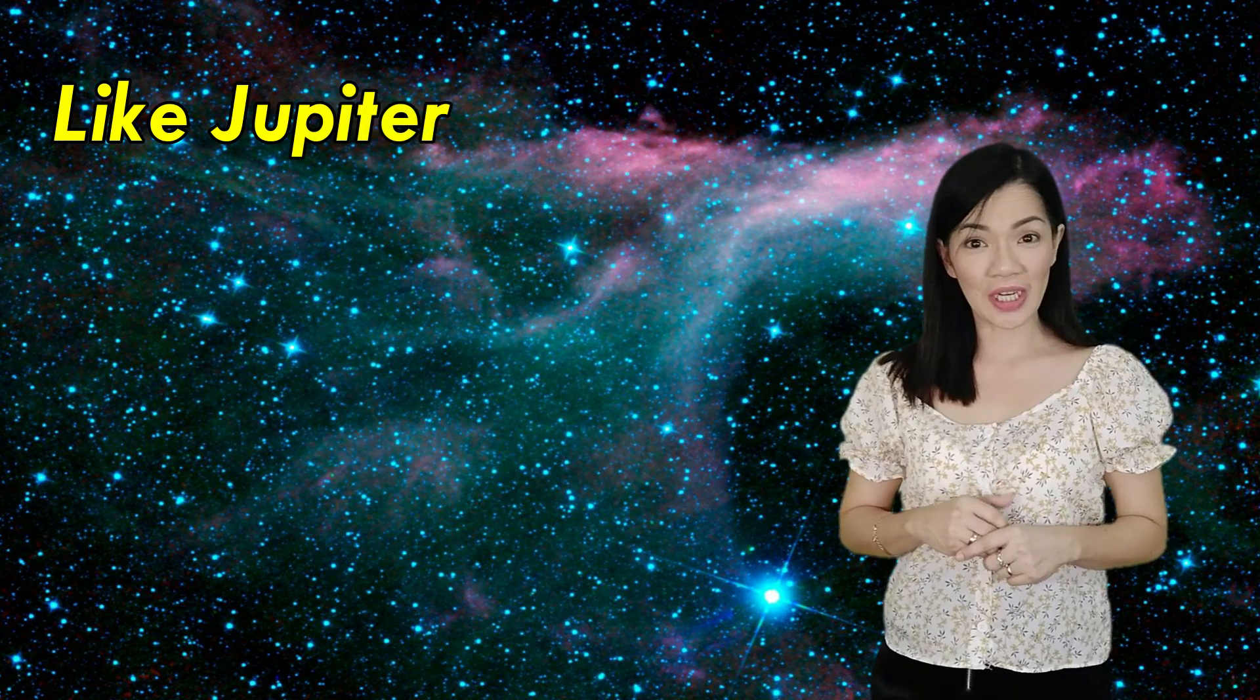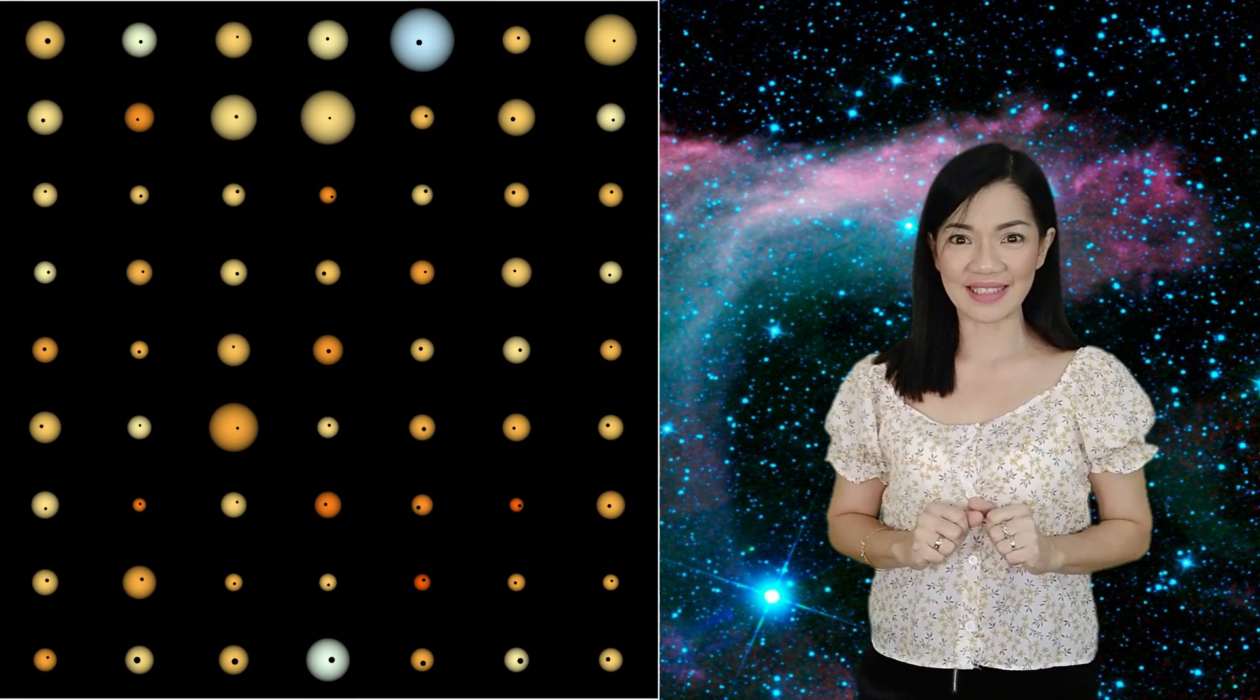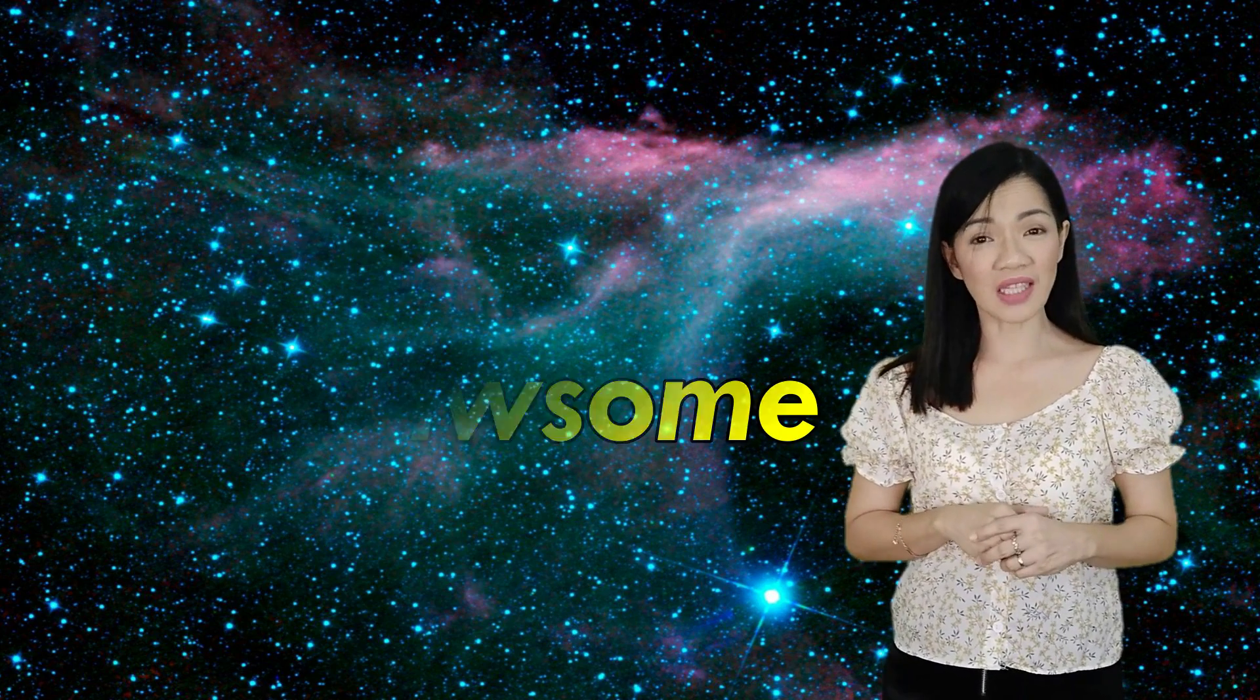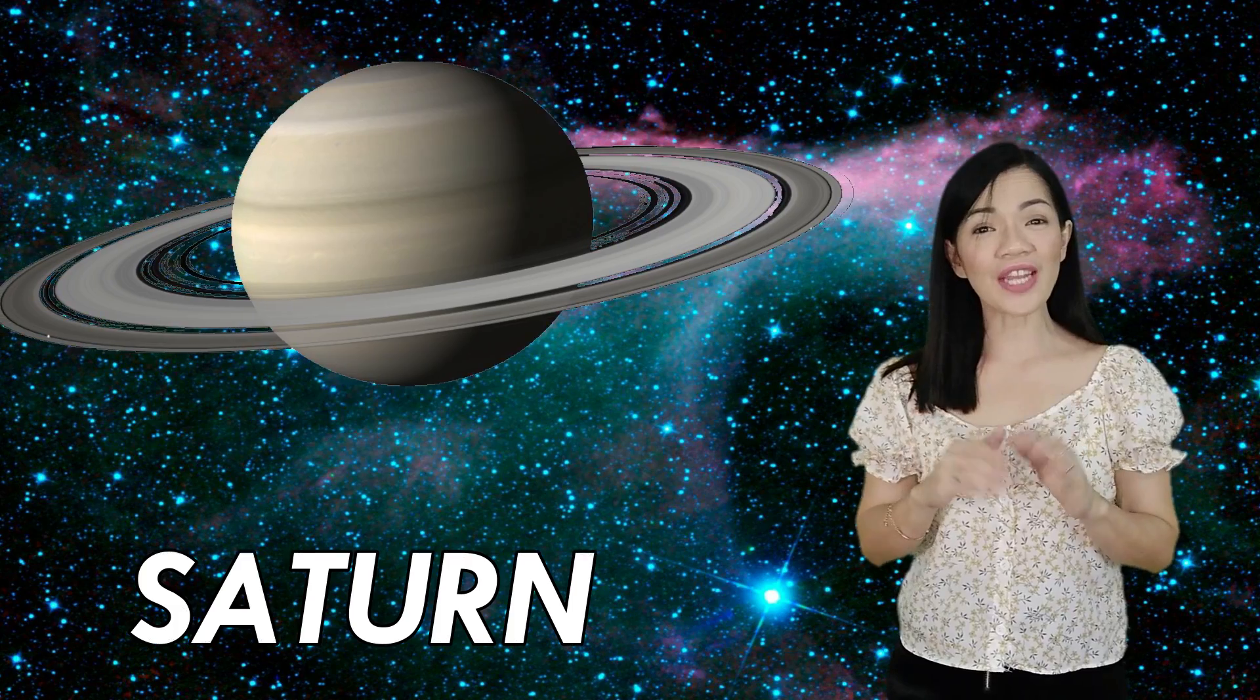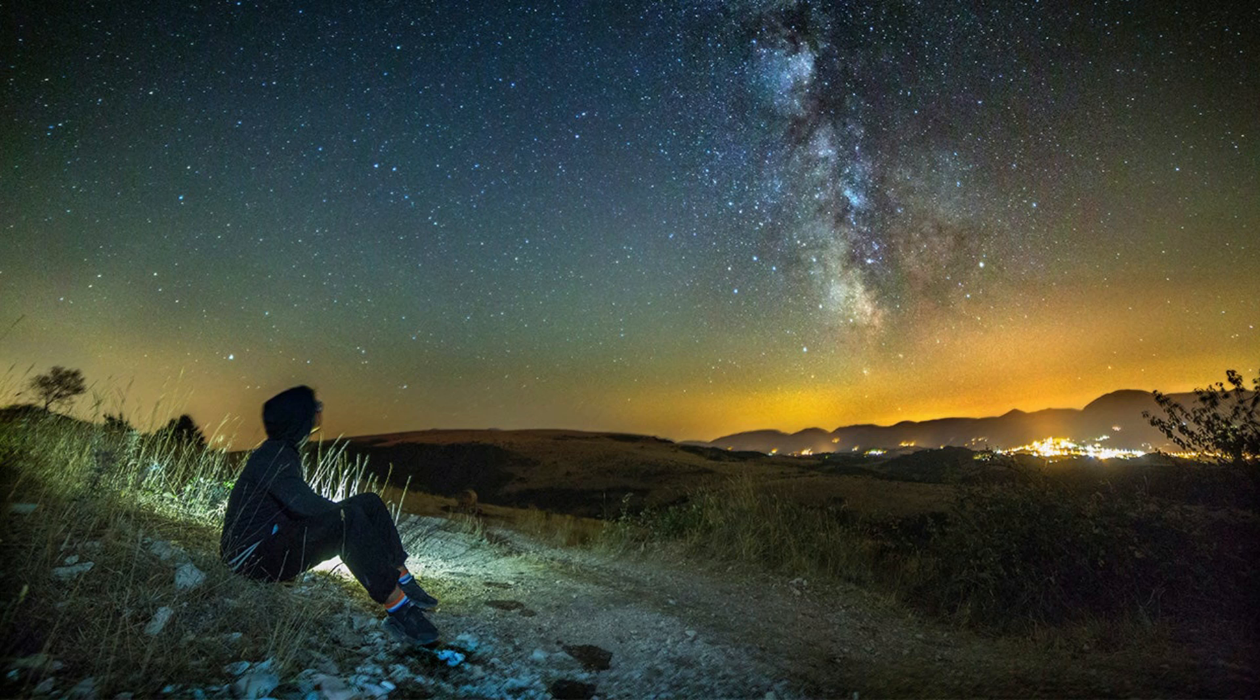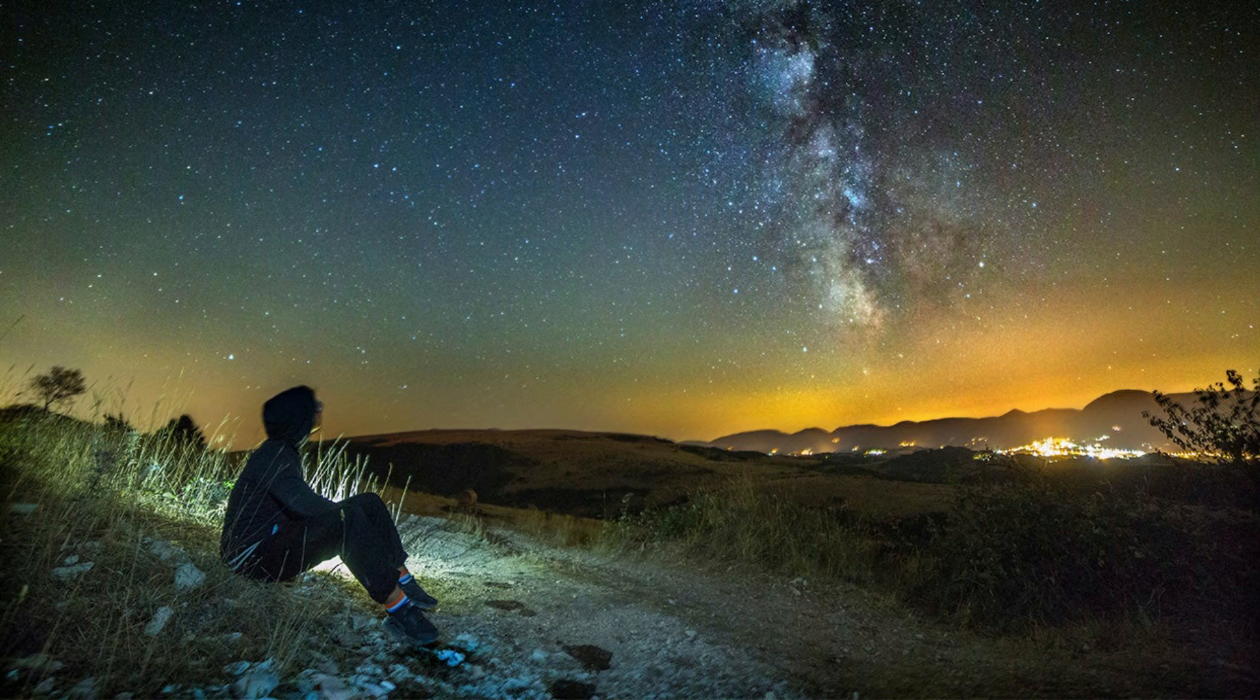Like Jupiter, Saturn has a lot of moons. Saturn has 62 moons. Wow! Tons of tons of moons. What's up with Jupiter and Saturn, right? And this is pretty awesome. Saturn is the farthest planet you can see without a telescope. That's right! You can see Saturn with your own eyes without a telescope. So, Saturn is a gas planet. It is the sixth planet from the Sun.